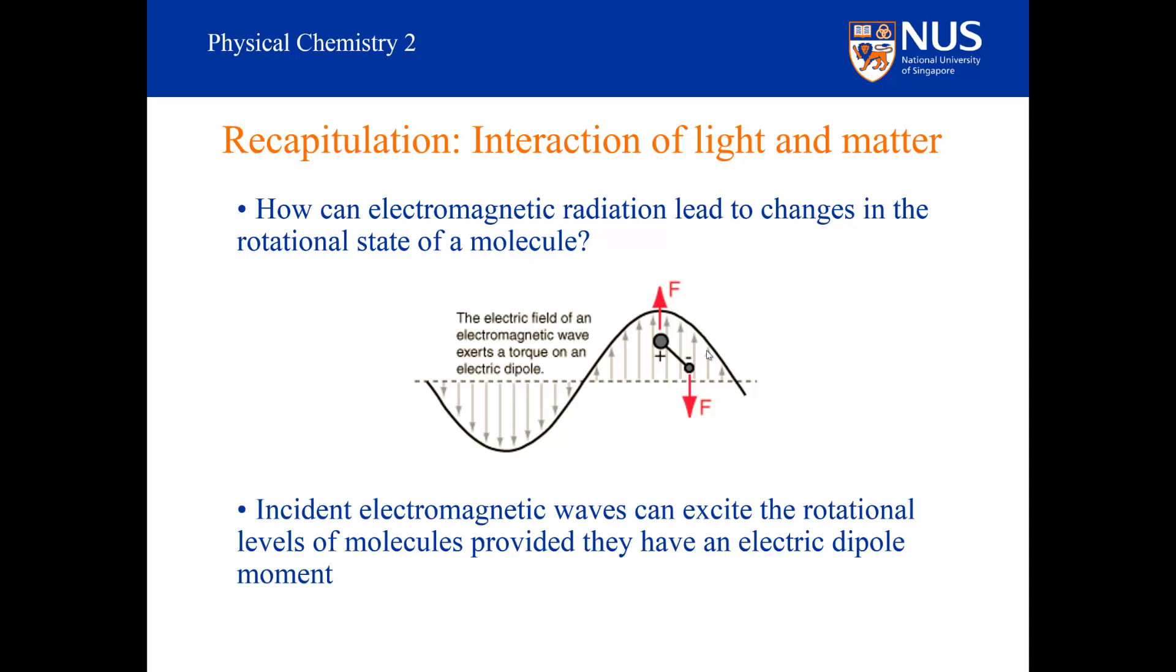In particular, this simple model implies that electromagnetic radiation will excite the rotational levels of a molecule provided it has an electric dipole moment. It can do this because the electromagnetic field can then exert a torque on the molecule.